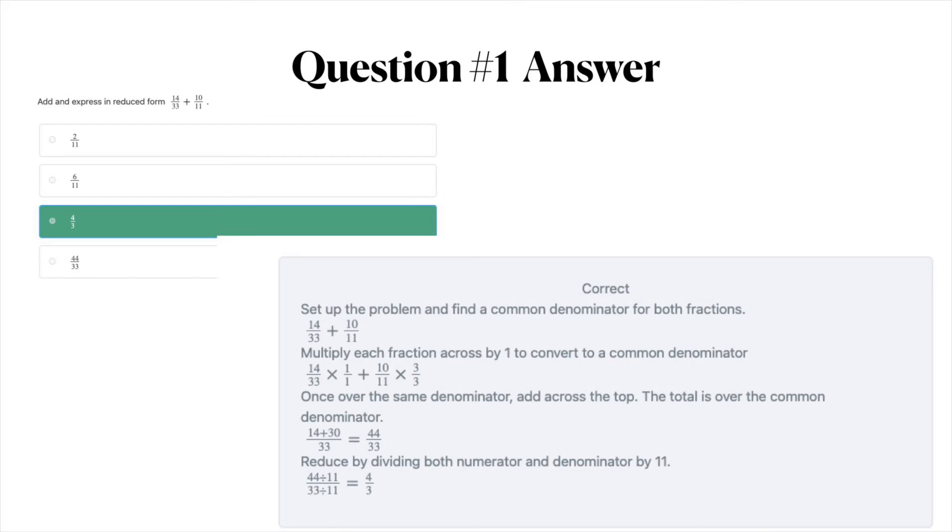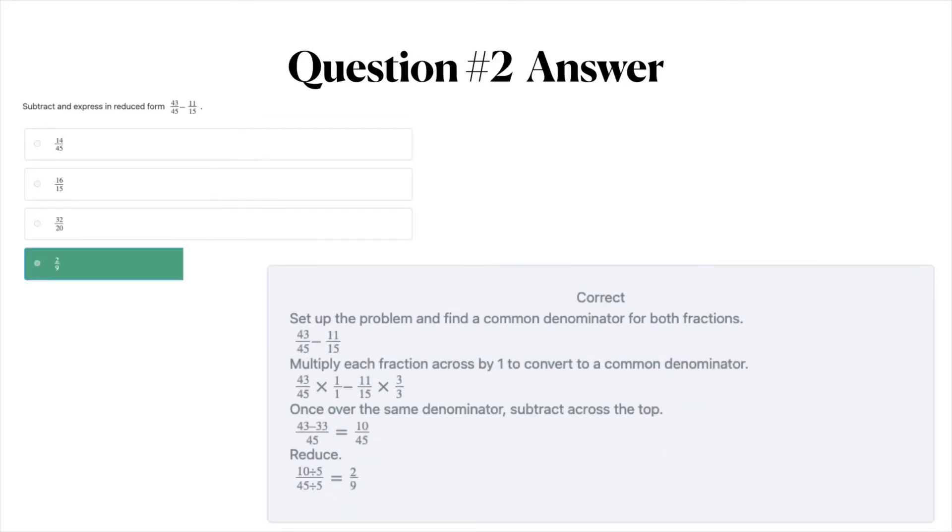The answer to question number two is D, 2 over 9. First you set up the problem and find a common denominator for both fractions. Then you'll multiply each fraction across by one to convert to a common denominator. Once you're over the same denominator subtract across the top. Finally you're going to reduce the fraction. Again if you want to take some time to look at this problem go ahead and pause the video here.